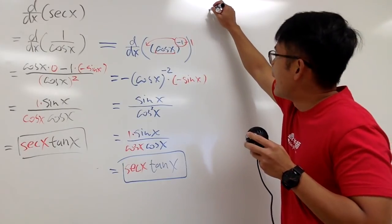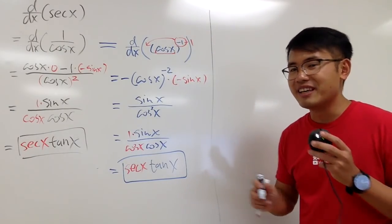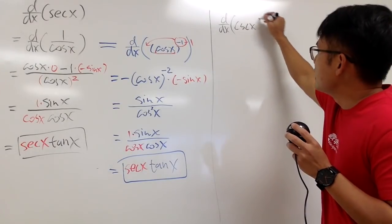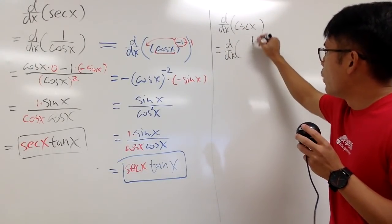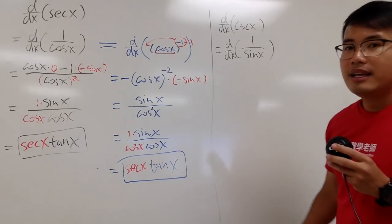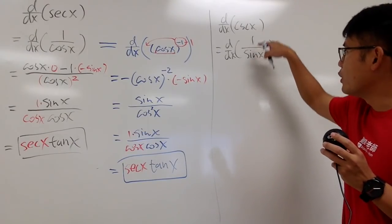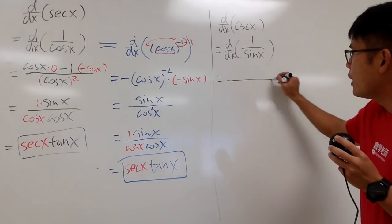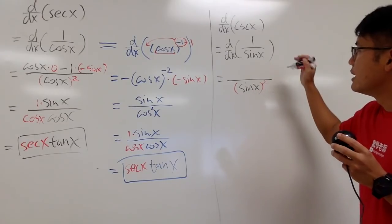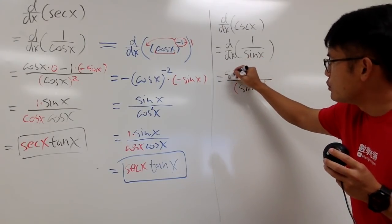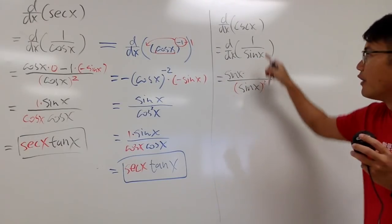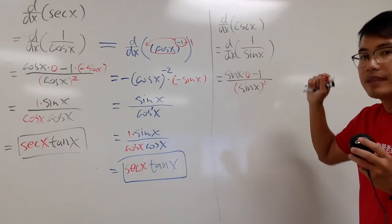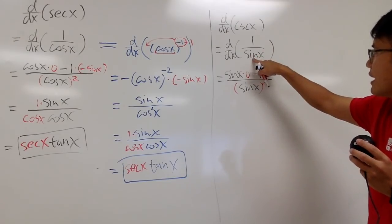We'll finish this up by going over the derivative of cosecant x. There are a few ways to do it — I will show you two. Cosecant x — let's differentiate 1 over sine x. Using the quotient rule, I will square the denominator, that's sine x squared. Then bring the bottom function, sine x, up times the derivative of the top function. The derivative of 1 is 0. Then minus the top function times the derivative of the bottom. The derivative of sine x is cosine x.